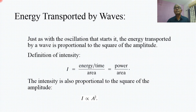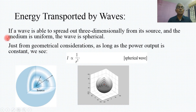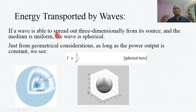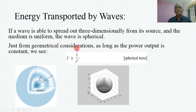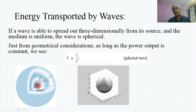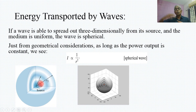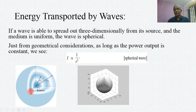More is the amplitude, more will be the intensity. Now, how is energy transported in case of a spherical wave? A spherical wave means the wave spreads out three-dimensionally from the source. If the medium is uniform, then from geometrical consideration, as long as power output is constant, intensity (I) is inversely proportional to the square of the radius of the spherical wave. More is the radius, less will be the intensity.